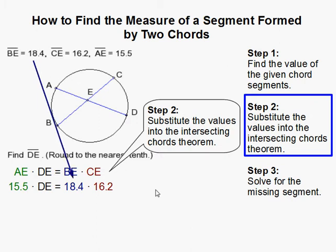So I substitute it here: 18.4, this one 16.2 for CE, and 15.5 for AE.